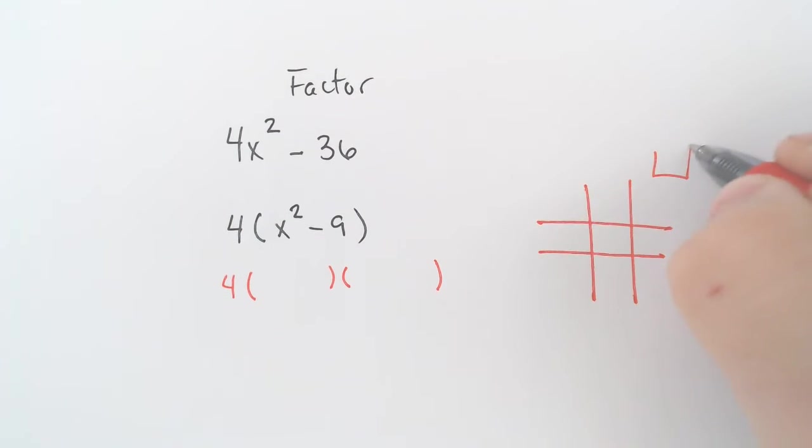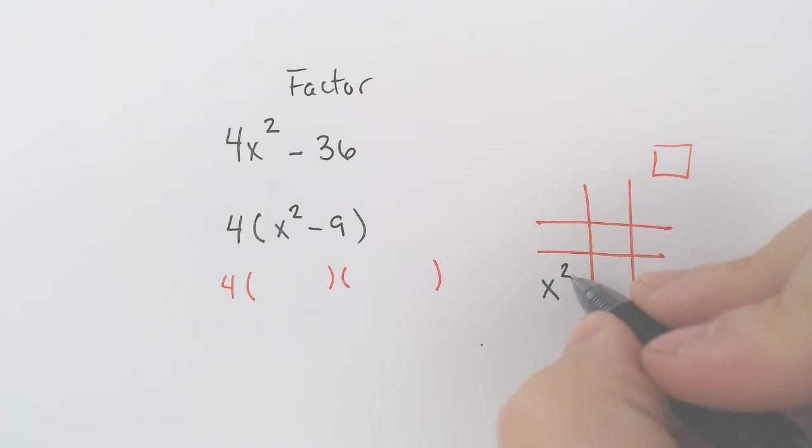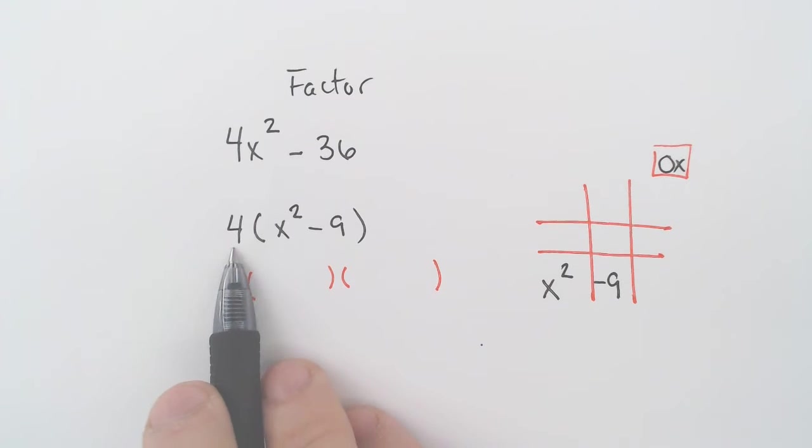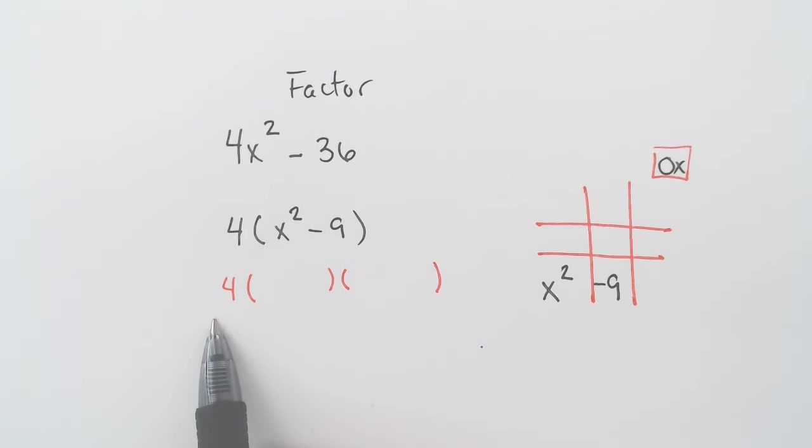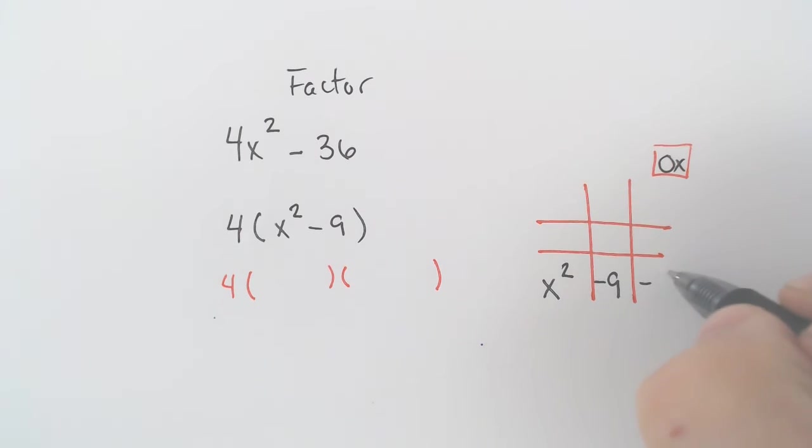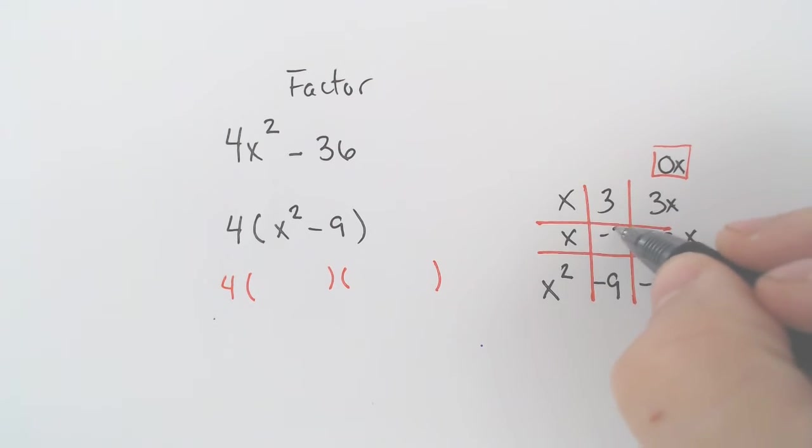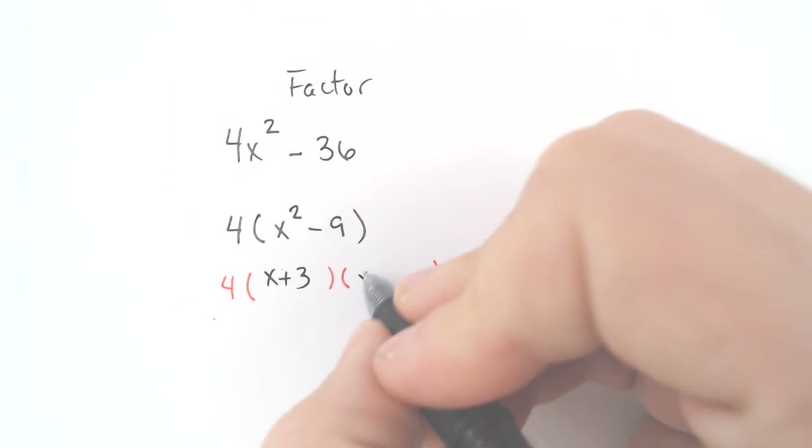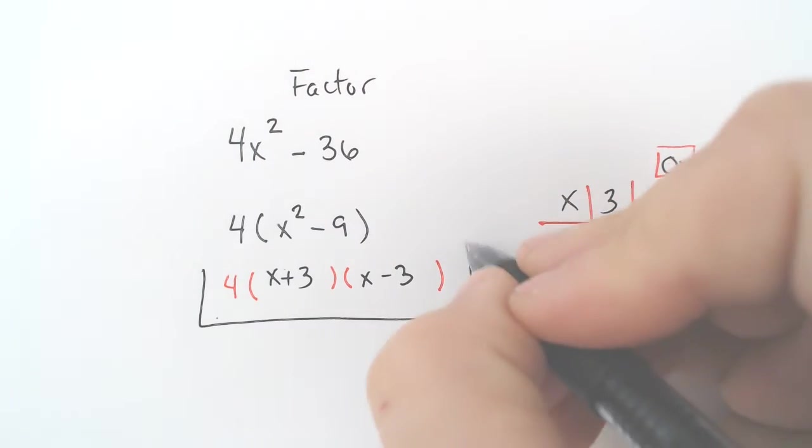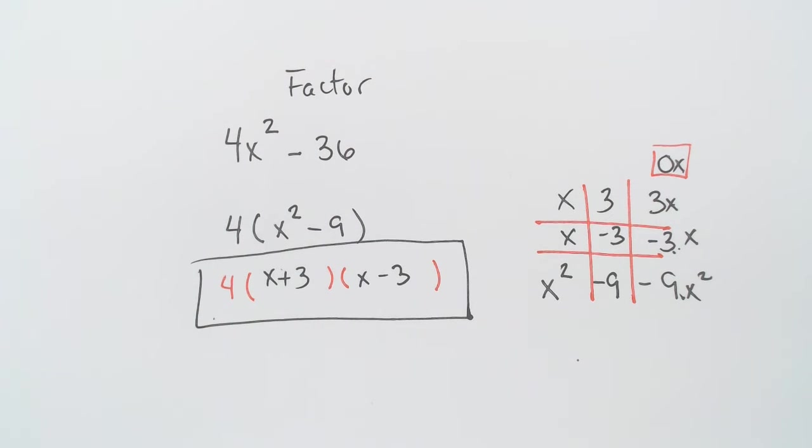And then from there, you are putting that and factoring using the method of your choice. My method is the tic-tac-toe board. We put our first term here. We put our last term there, and there wasn't a middle term. This 4 isn't a term anymore. It just is going to be hanging out front. We have to figure out what multiplies to negative 9, and that would be 3 and positive 3, multiplying down to the 9 but adding up to 0. x and x, 3 and negative 3. So we end up with x plus 3 and x minus 3 in this case. If the 4 didn't factor out, then we would have had to deal with that as well. Moving right along.